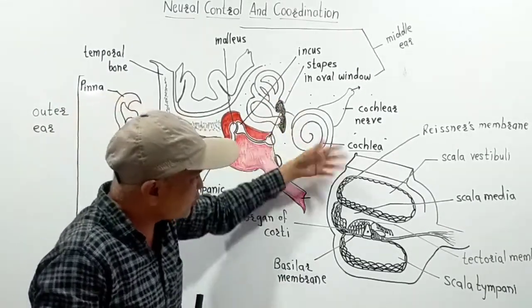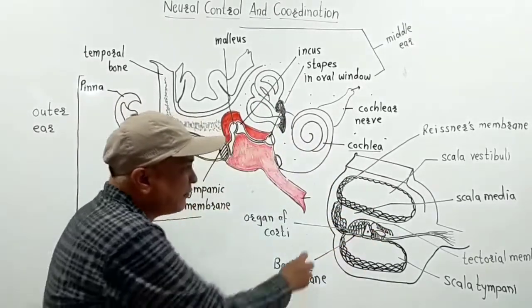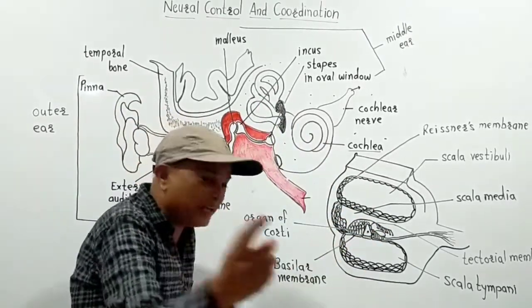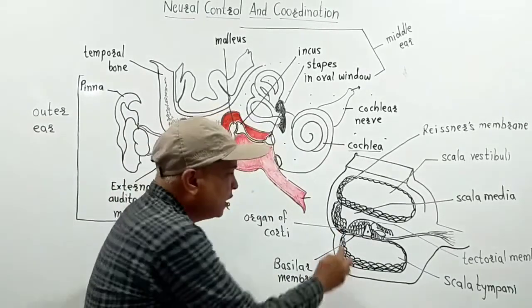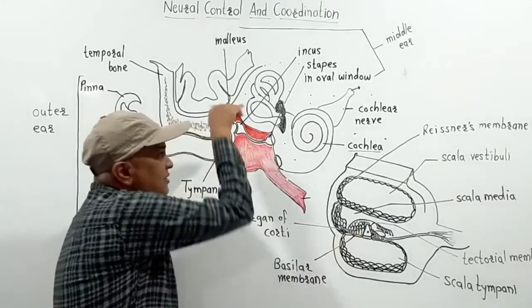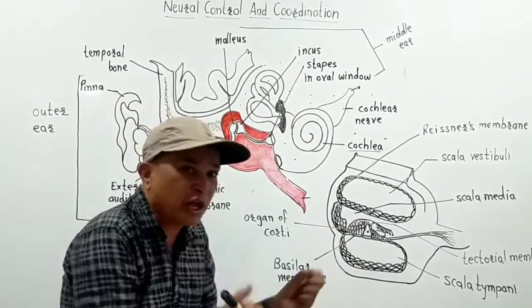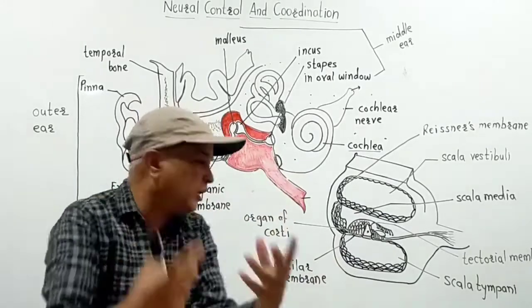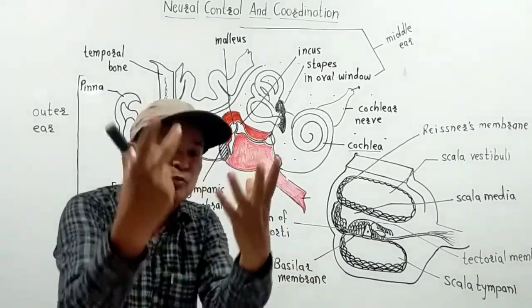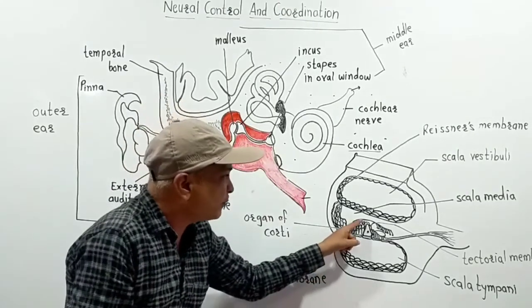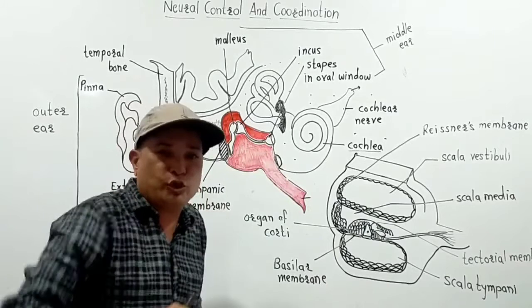As soon as these waves pass through the endolymph into the cochlea, in the cochlea when these waves go, a ripple is induced in this basilar membrane. Wherever there is fluid...